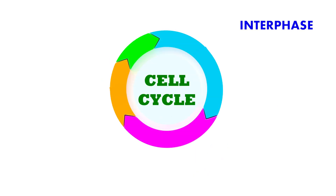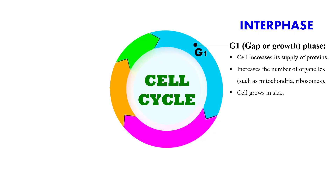Interphase is also called the preparatory phase because in this phase the cell accumulates all the necessary material required for cell division. Interphase is further divided into sub-phases. The first is G1 phase, where G stands for gap or growth. In this phase the cell increases the supply of its proteins, and organelles such as mitochondria and ribosomes are also synthesized, causing the cell to grow in size. G1 is the longest duration sub-phase of interphase.